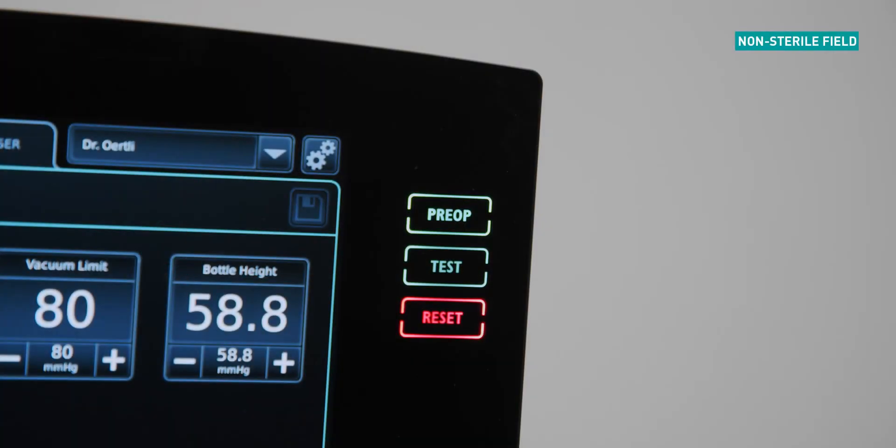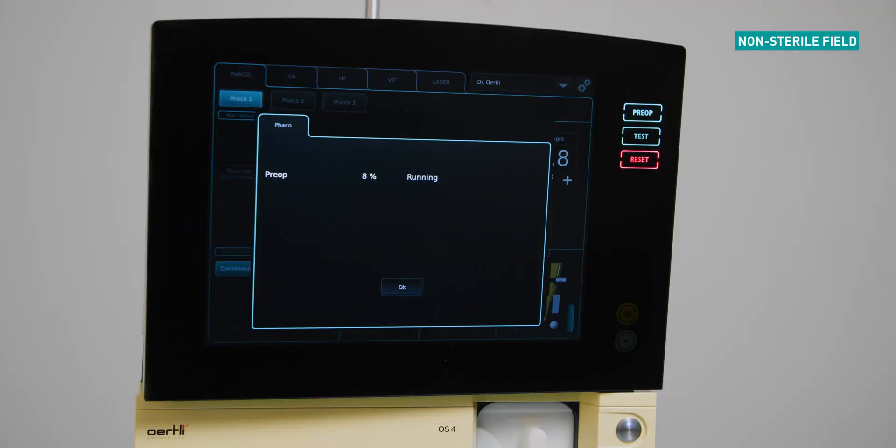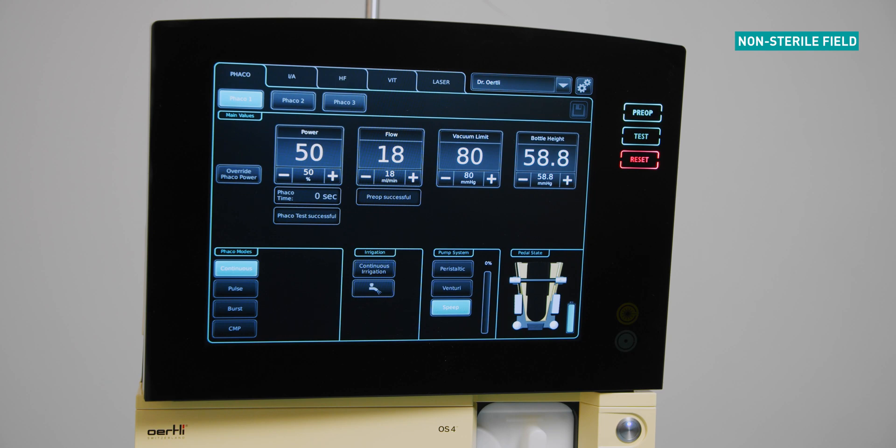Press the pre-op button to start the priming cycle. Allow the machine to complete the pre-op cycle. The pre-op cycle takes approximately one minute. The message successful will appear once the FACO test is complete. The device is now ready to use.